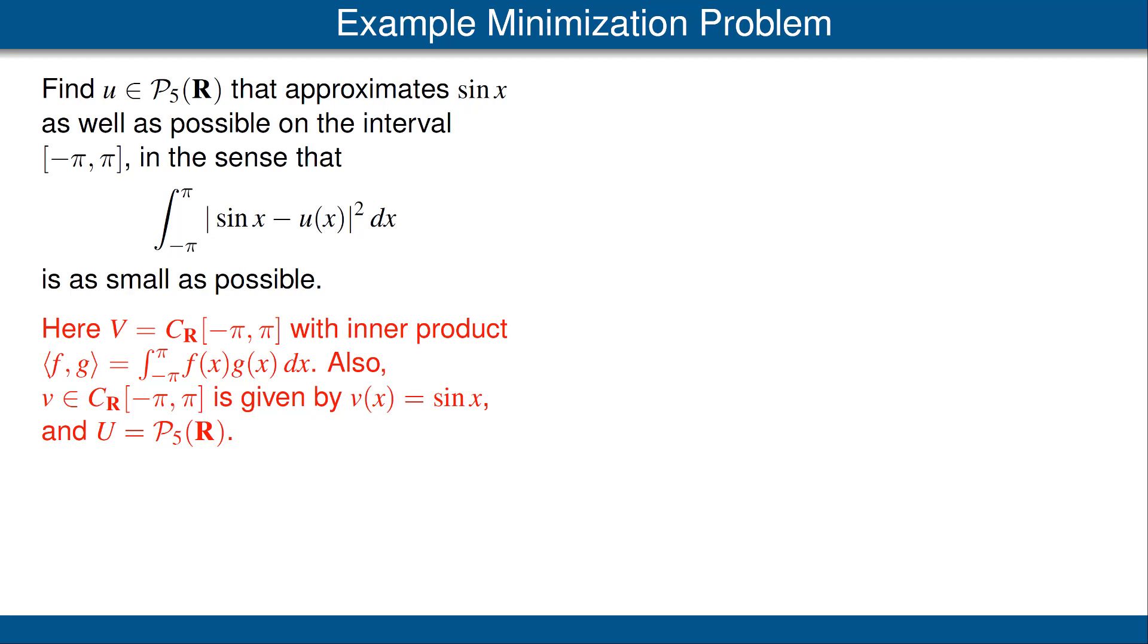Notice that if f equals g, then the inner product of f with f is the integral of f squared, which is exactly what we want in terms of the minimization problem stated above. Also, we'll let our vector v be given by the function v(x) equals sin x,